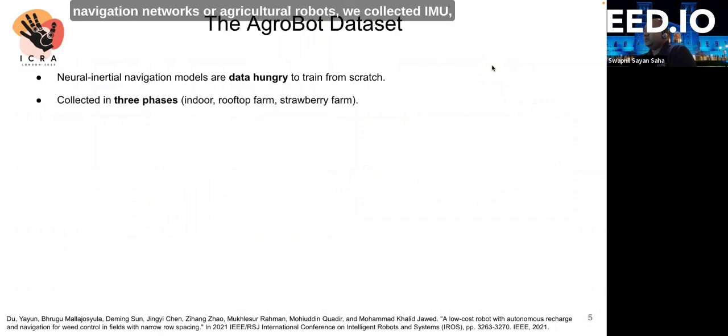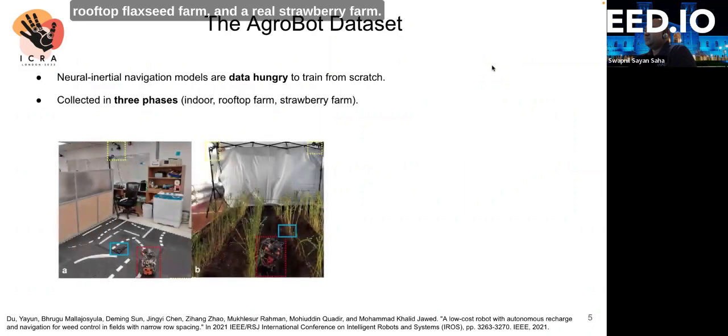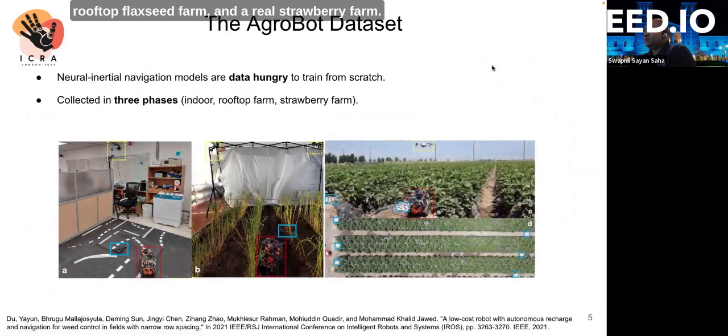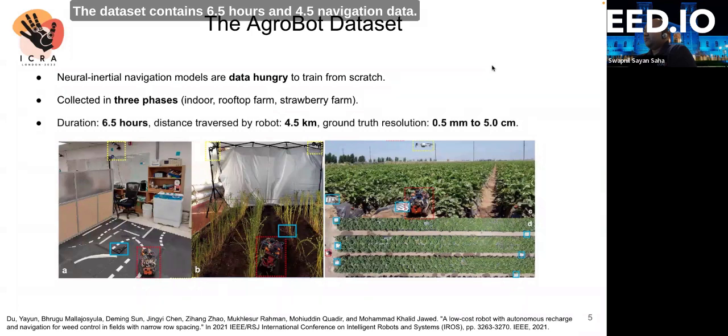To pre-train neural inertial navigation networks for agricultural robots, we collected inertial, GPS, and high-resolution position data from a real weed management agricultural robot in three phases. This dataset, known as the Agro-Robot dataset, contains data for the robot navigating indoors, on the roof of a flaxseed farm, and a real strawberry farm. The last two phases emulate typical scenarios where the robot is expected to be deployed in. The dataset contains 6.5 hours and 4.5 kilometers of navigation data.